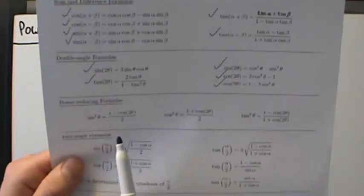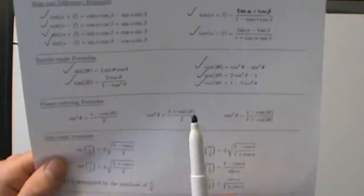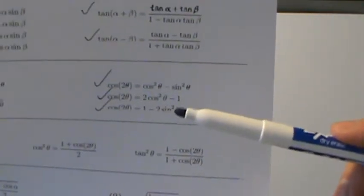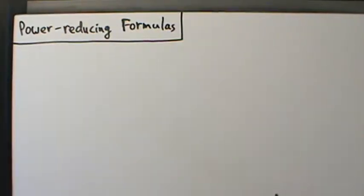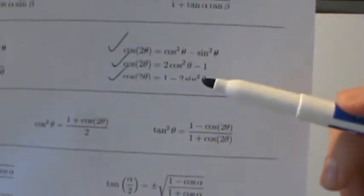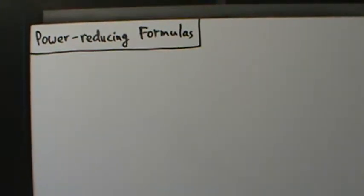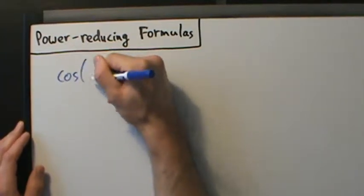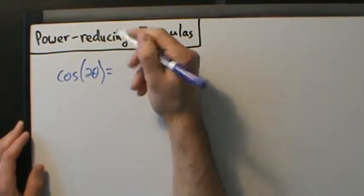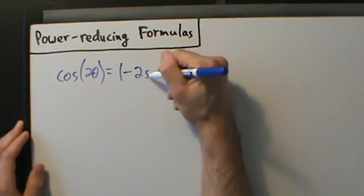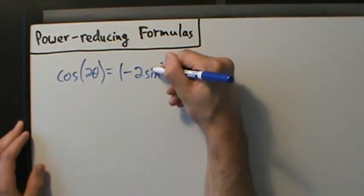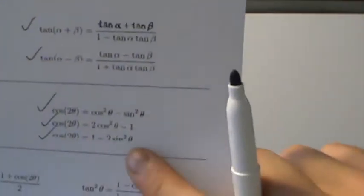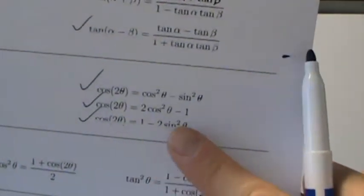These formulas actually follow directly — well, sine squared and cosine squared — they follow directly from the second and third double-angle formulas for cosine. So it's really just a matter of rewriting those equations. We'll start with the one for sine squared. Cosine of two theta equals one minus two sine squared of theta — we established that in an earlier video. That's this third formula right here: cosine of two theta is one minus two sine squared of theta.